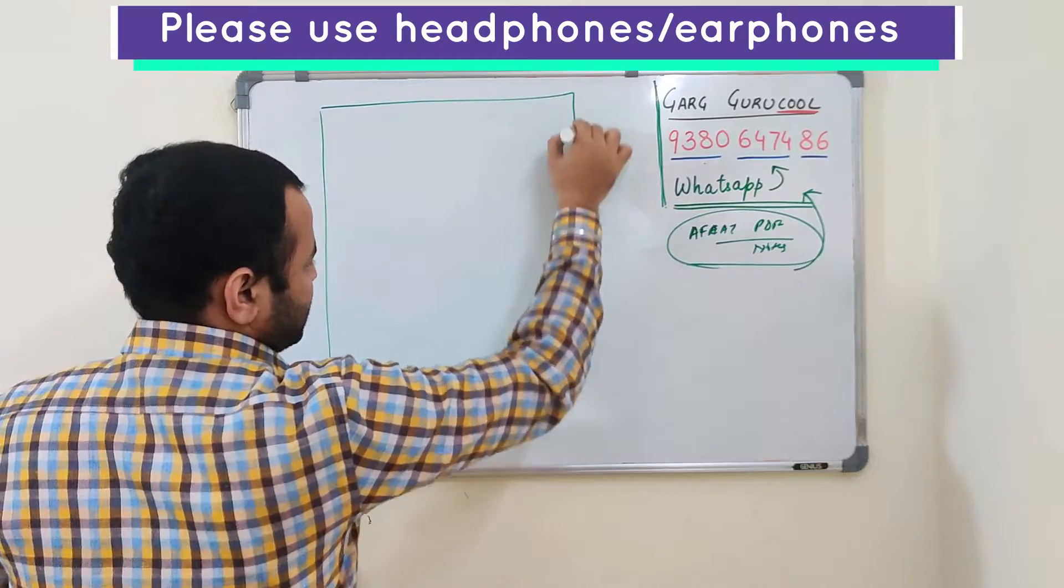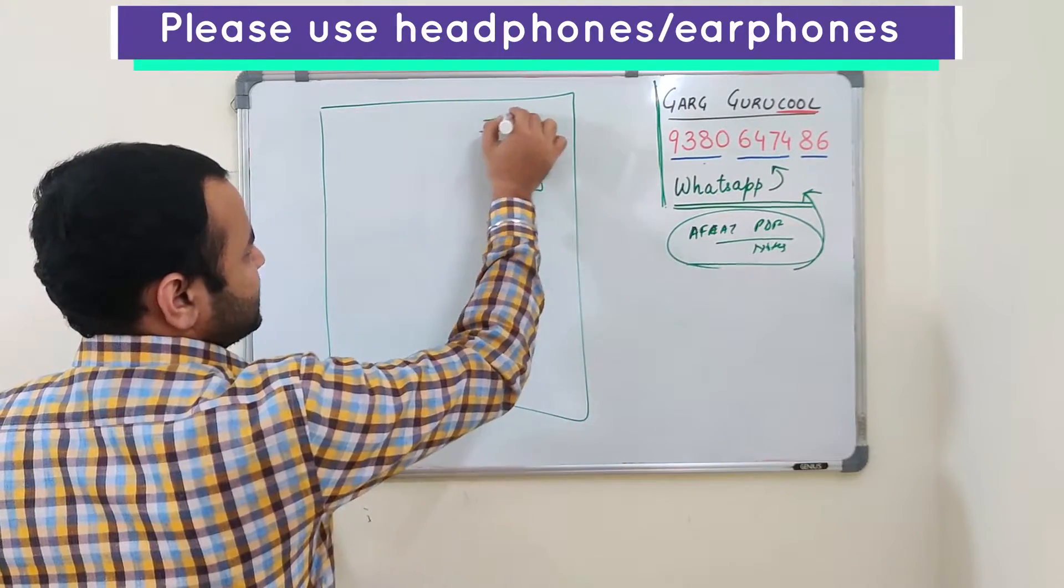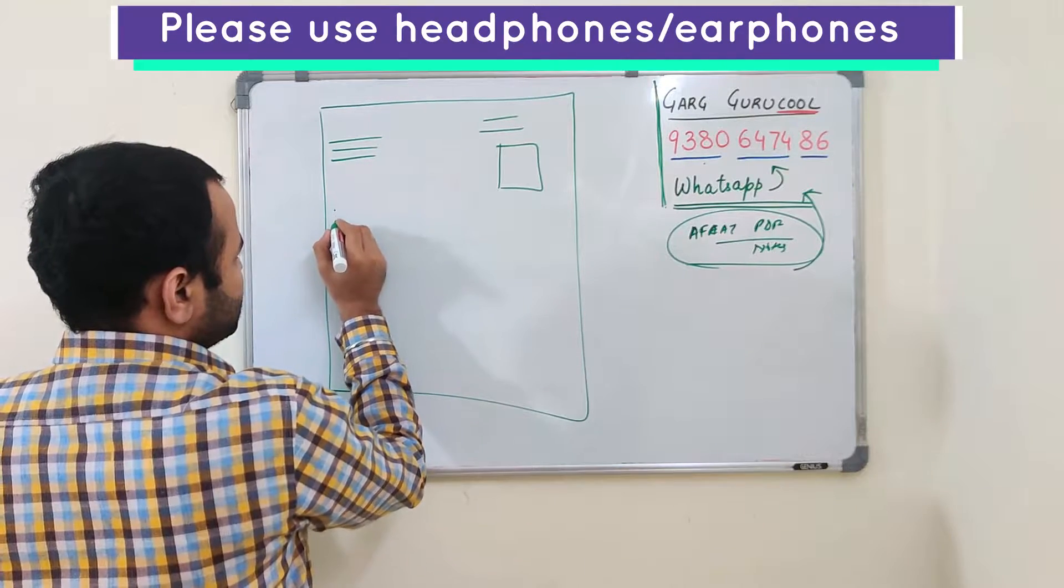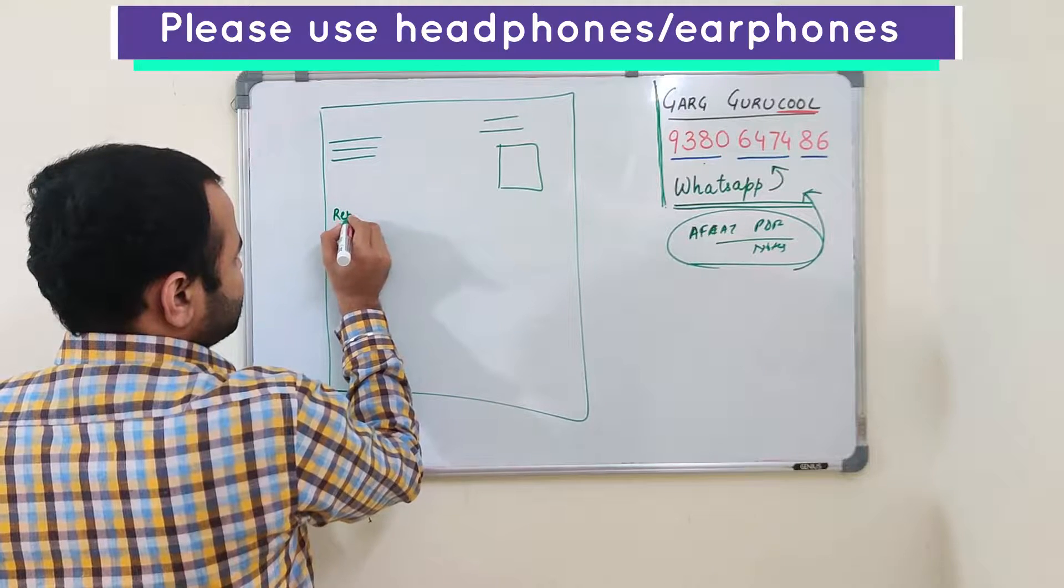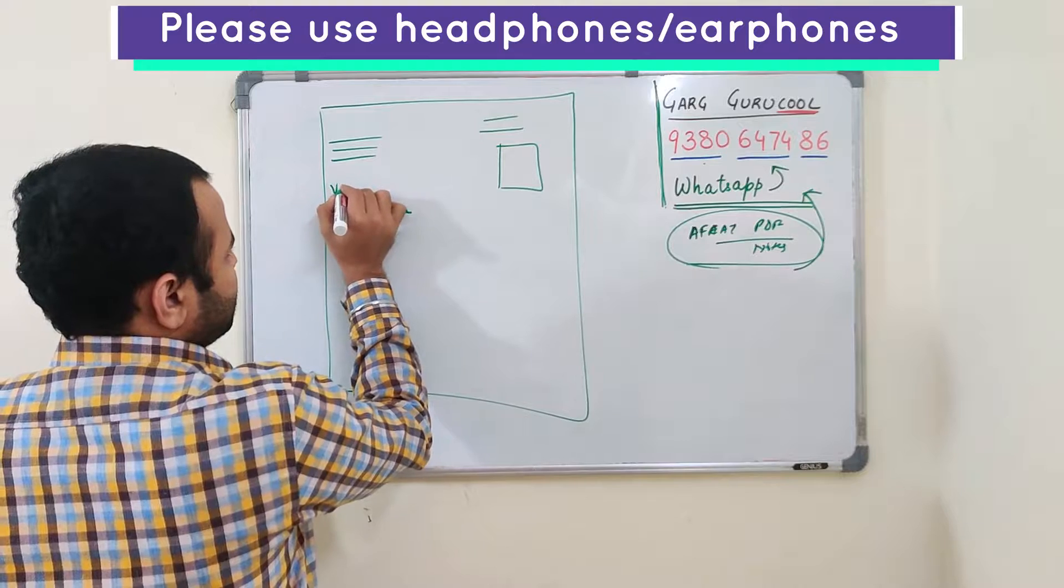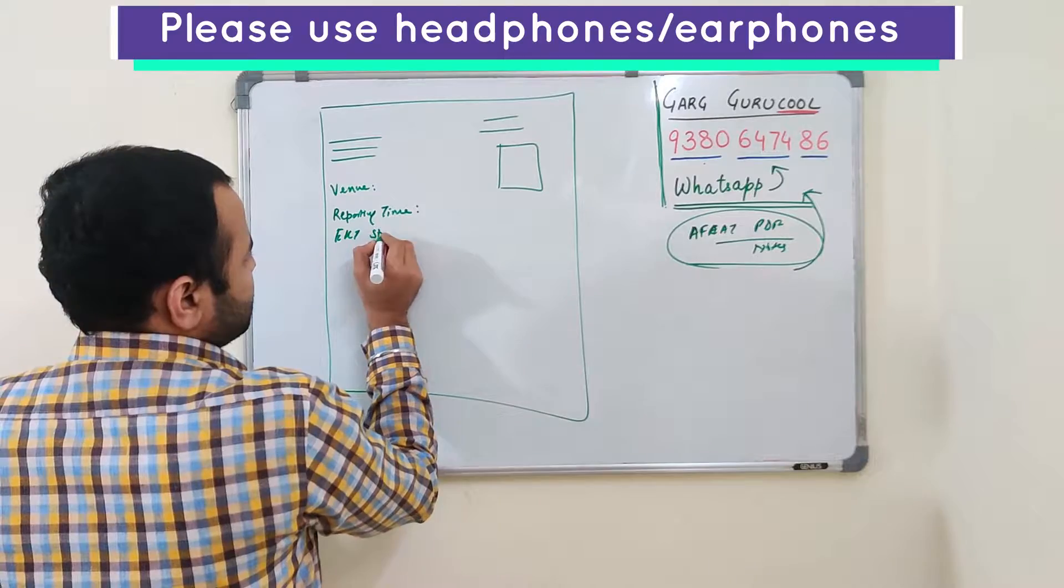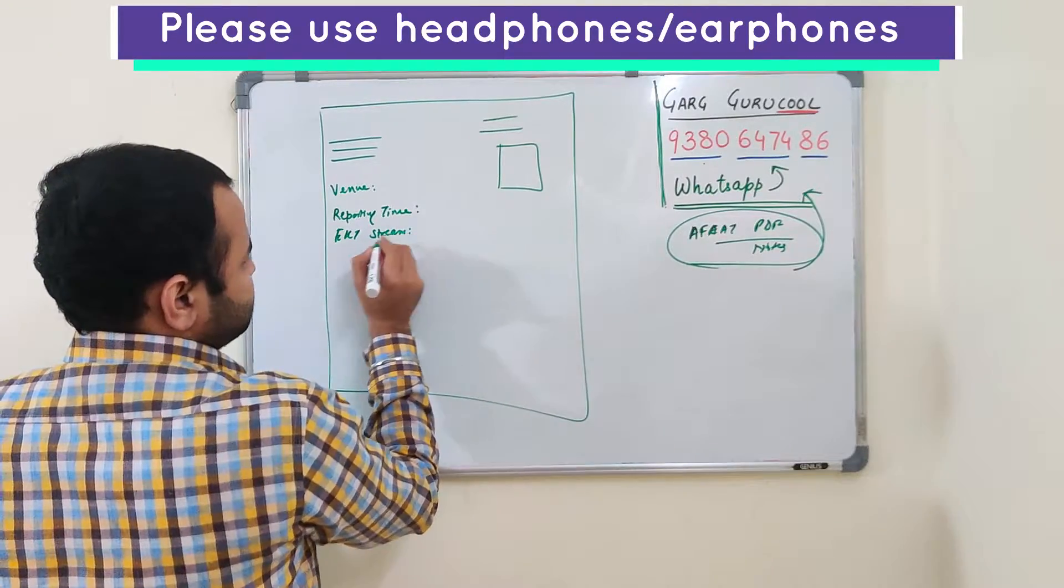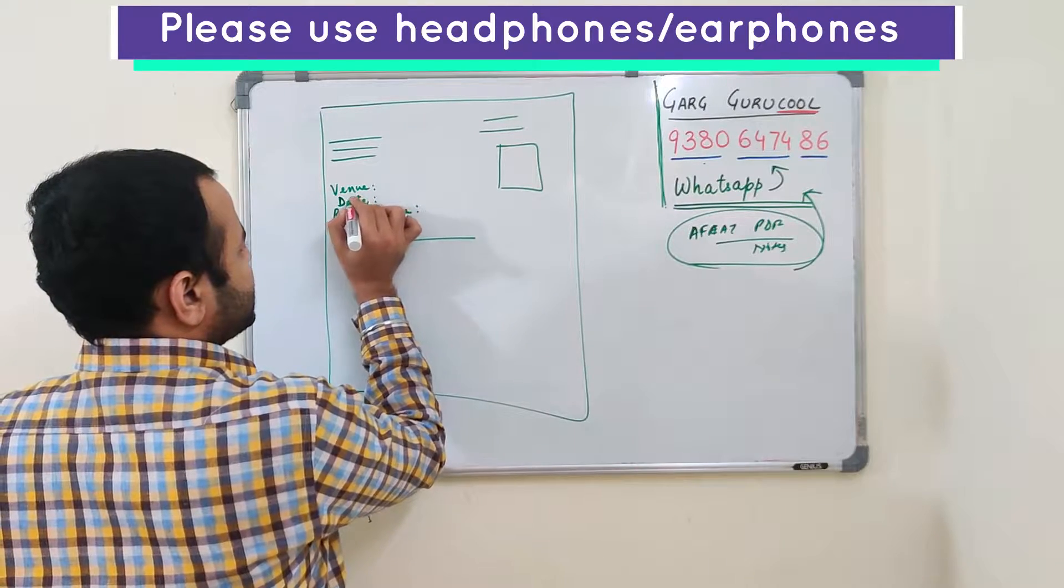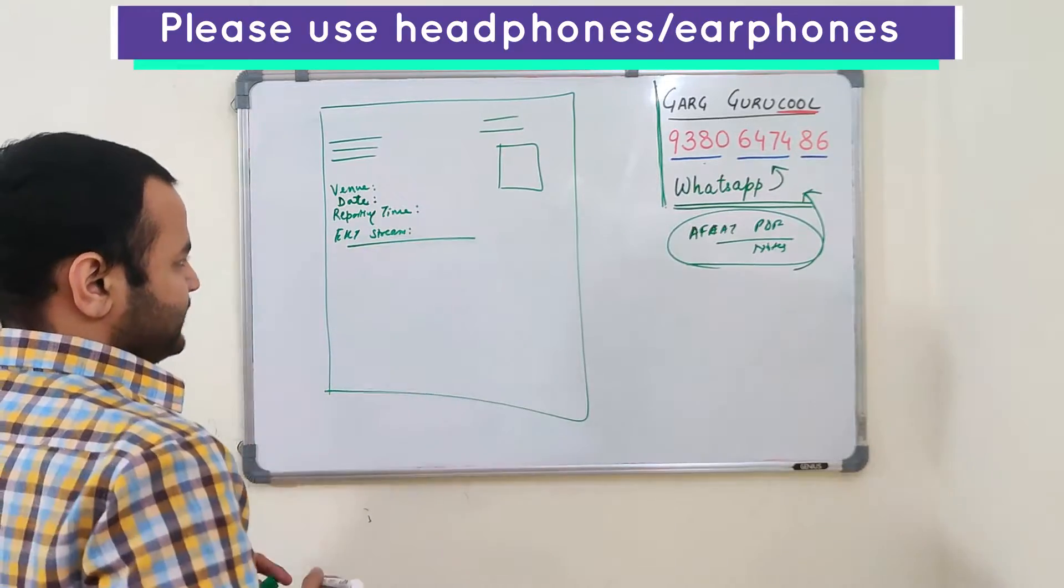If you see your admit card, this is your admit card. Here you have a picture, application number, registration number, name, mother's name, father's name. And here it is mentioned reporting time, venue, and EKT stream. Venue apart from venue they also mentioned date because AFCAT is happening on two dates. So date, reporting time, EKT stream.